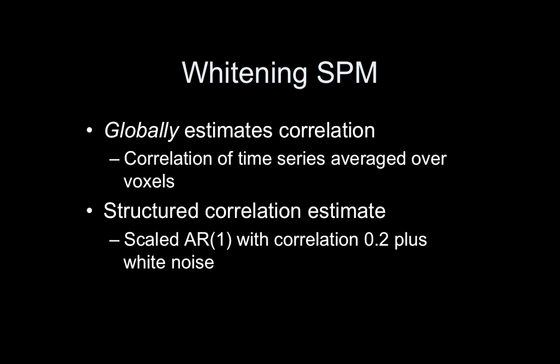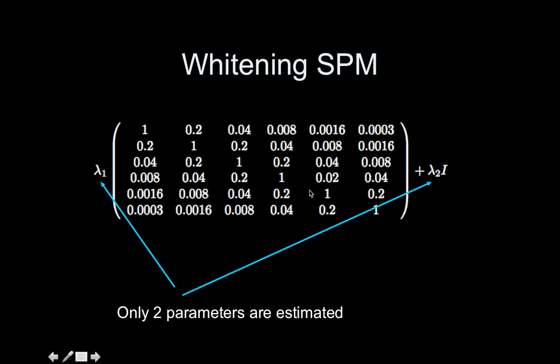So FSL ends up with a different estimate of V for each voxel, with the Tukey taper applied within voxel and autocorrelation estimates spatially smoothed using neighboring voxels. SPM globally estimates the autocorrelation using a parameterized model — a scaled AR1 with correlation 0.2 plus white noise, scaled by lambda-1 with added white noise lambda-2. This simplifies the problem to estimating just two parameters, which stabilizes things by estimating fewer parameters pooled across all brain space.